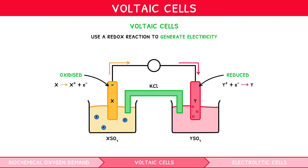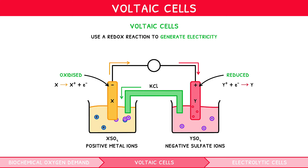This results in the solution accumulating negative SO₄²⁻ ions, whilst the electrode exhibits a deficiency of electrons, making it positively charged. As oxidation continues, there is accumulation of positive metal ions in the solution of the oxidised side, and negative SO₄²⁻ in the solution of the reduced side. The salt bridge therefore moves negative ions, here Cl⁻, into the oxidised side, and positive ions, here K⁺, into the reduced side, balancing the charge and allowing the reaction to continue.